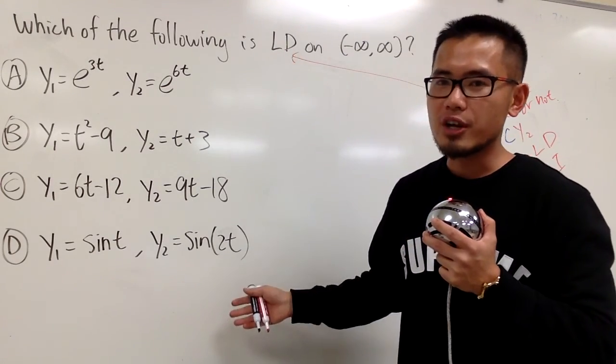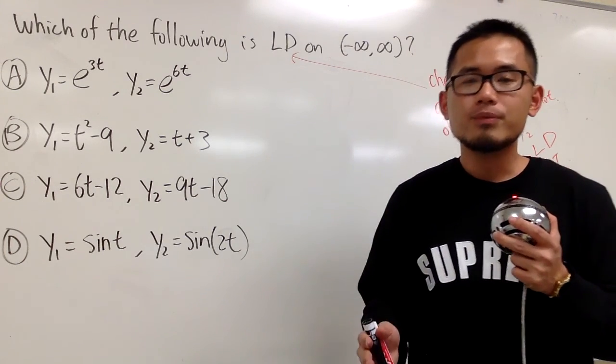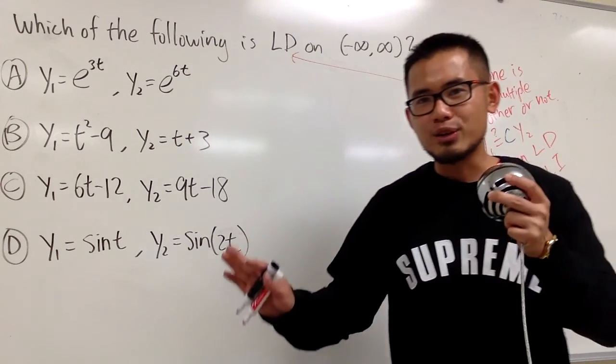And as we can see, we have four choices here. Each one has two functions. And let me tell you, to check if two functions are linearly dependent or not, it's not that bad at all.